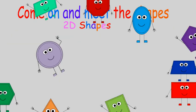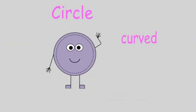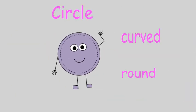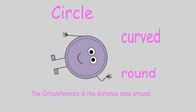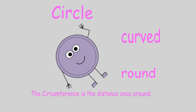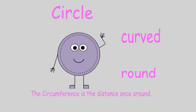The circle is curved and round. The circumference is the distance once around.